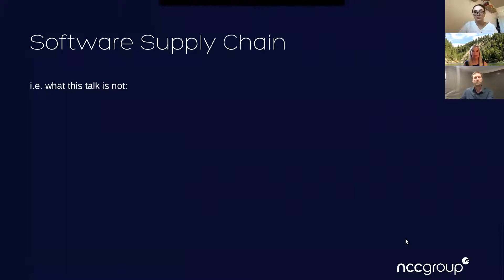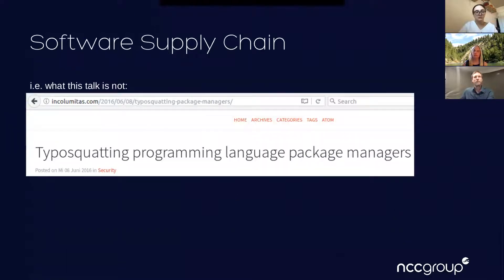Here's a research paper example: university researchers realized that when installing software on a Linux system using package managers, if you make a typo and try to install the wrong package, you get an error — unless a package with that name exists. So they put in a bunch of fake packages with typo names and were able to get root on thousands of machines. It was an academic paper and they published the results, getting a lot of it fixed, but if someone wanted to do this maliciously, it could easily be done.